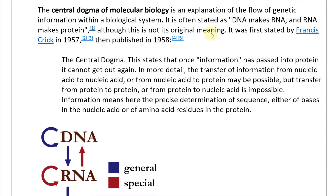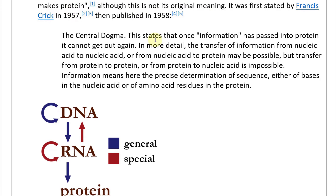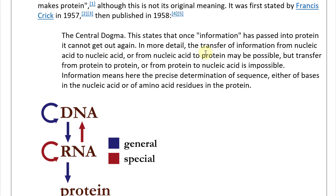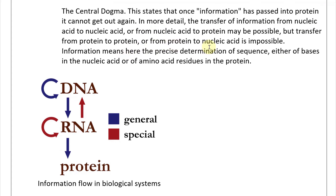Crick wrote that the central dogma states: 'Once information has passed into protein, it cannot get out again.' In more detail, the transfer of information from nucleic acid to nucleic acid or from nucleic acid to protein may be possible, but transfer from protein to protein or from protein to nucleic acid is impossible. 'Information' here means the precise determination of sequence, either of bases in the nucleic acid or of amino acid residues in the protein.